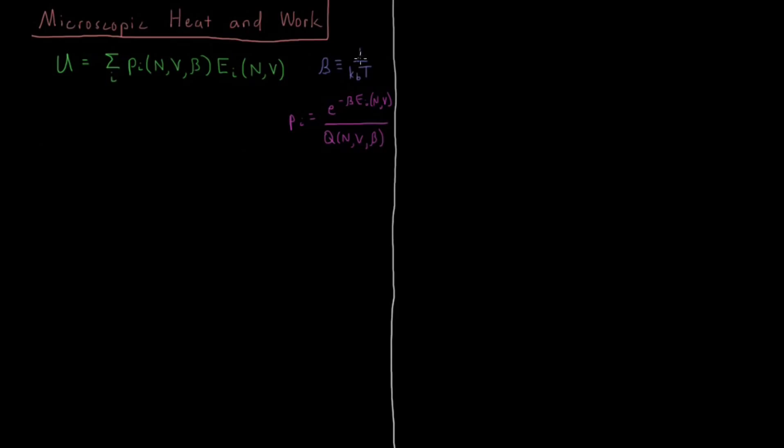Remember that's defined as 1 over kBT. And those probabilities just come from the Boltzmann factor and the partition function. And then the partition function is also just the sum of Boltzmann factors. So this all just depends on what the Boltzmann factors of all these energy levels are.